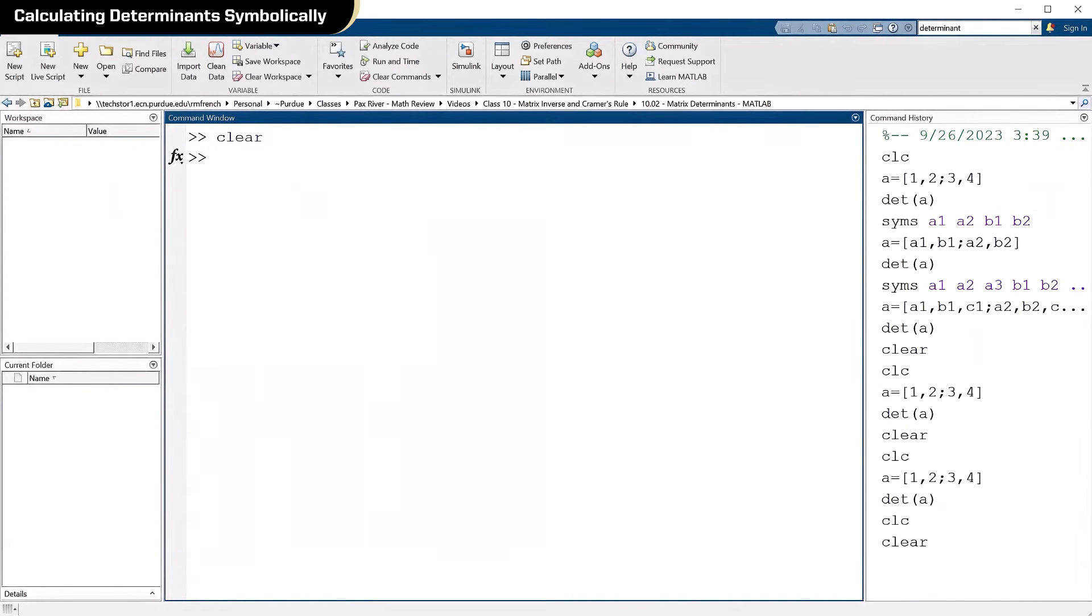Let's try this same thing now symbolically. Let's try using letters rather than numbers. So I'm going to type in syms for symbolics, and I'm going to use that command right there. So A1, A2, B1, and B2 will all now be symbolic variables.